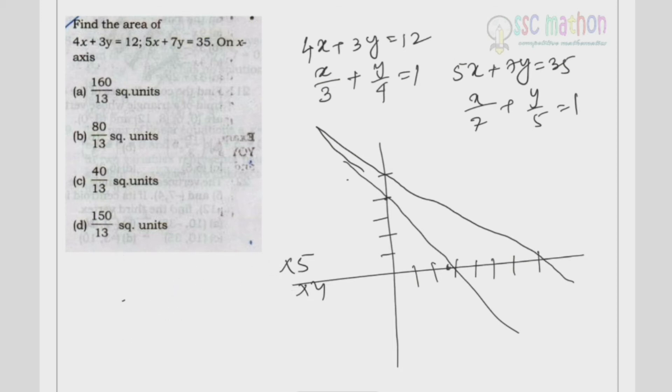We get 4 × 5 = 20x, plus 3 × 5 = 15y equals 60. And 5 × 4 = 20x, plus 7 × 4 = 28y equals 140.